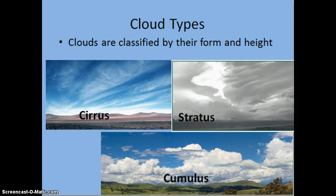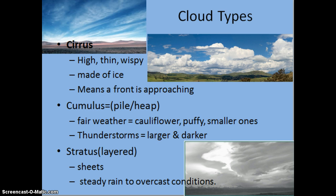The three main types of clouds are cirrus, stratus, and cumulus. Cirrus clouds are those high, thin, wispy clouds made of ice. When we see them, we know that a front is approaching.